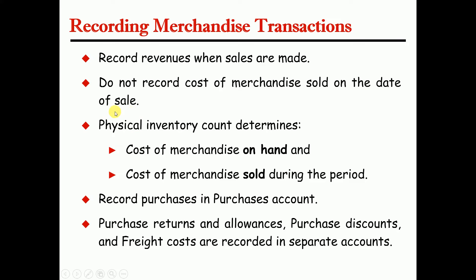Next, we are going to find physical counting. In order to determine the cost of merchandise or the cost of goods on hand, and the cost of goods sold, at the time of purchasing inventory in the periodic system, they would debit a purchase account and credit a payable account.